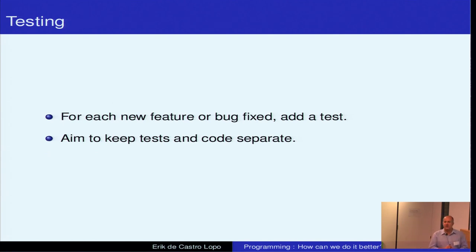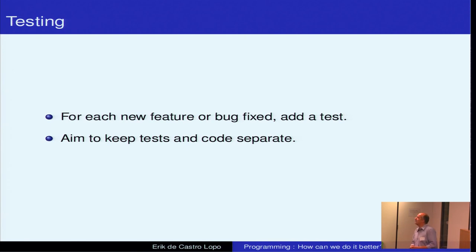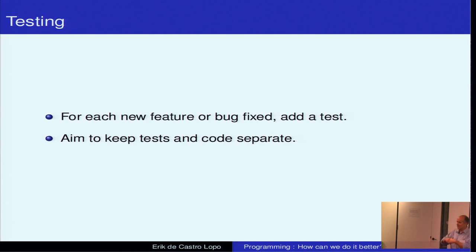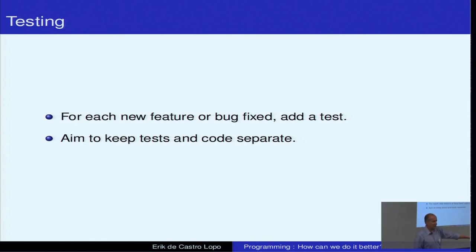When you add new features and fix bugs, it's a really good time to add a new test. Basically aim to keep tests and the actual code as separate as possible — obviously in the same tree. I have seen cases where people put a test at the bottom of each file, and I just find that hard — when I'm searching for the test, I'm searching the code as well. If it's in a separate directory, you can search for the tests in the tests directory.